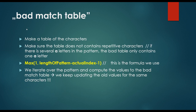So what about this badmatch table? We have to make a table of the characters — make sure the table doesn't contain repetitive characters. So if there are several 'A' characters in the pattern, the badmatch table only contains one 'A'. The formula we use: take the maximum of 1 and the length of the pattern minus the actual index of the character in the pattern, minus 1. We iterate over the pattern, compute the values, and keep updating old values for the same characters because the table doesn't contain repetitive characters.